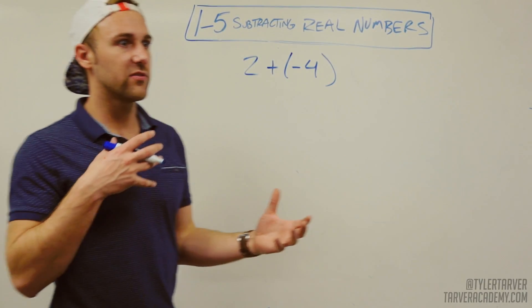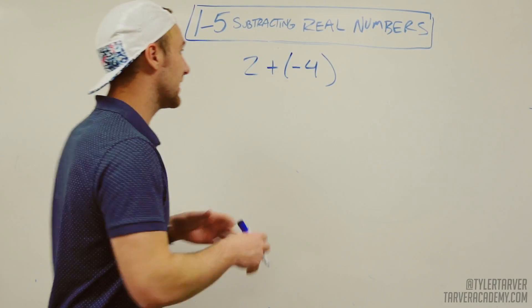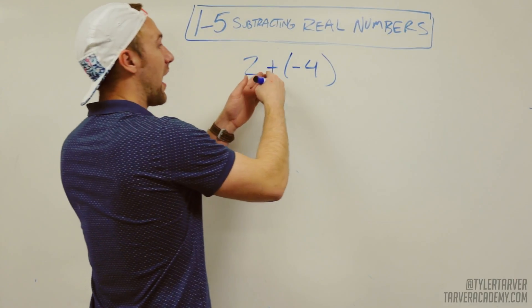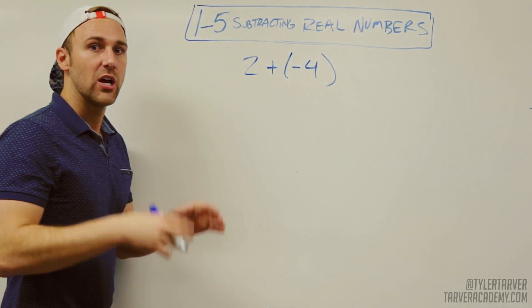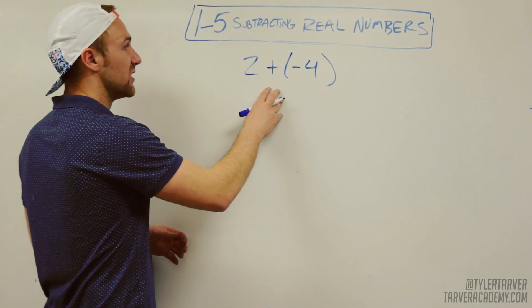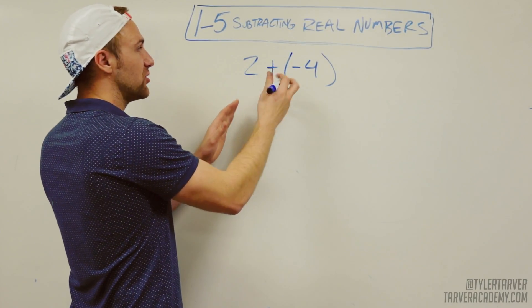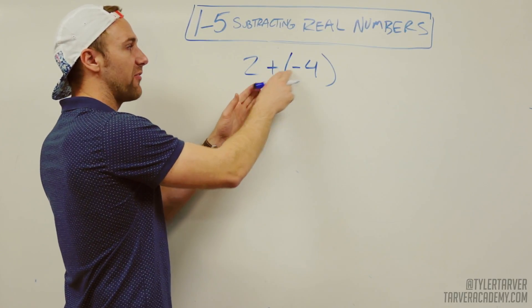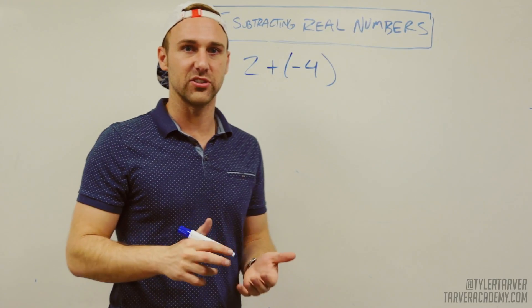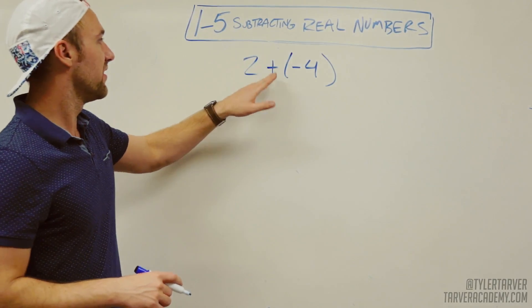What properties of subtracting numbers tells us is that whenever you are adding a negative, you can drop that plus sign. What that does is it allows you to say, you know what? That negative is more powerful. It defeats. It's like paper, rock, scissors.